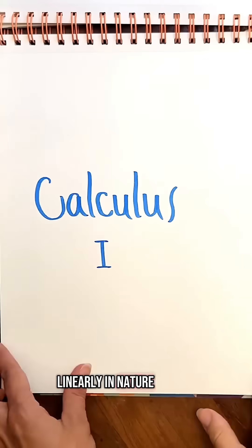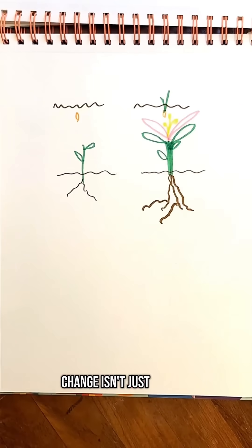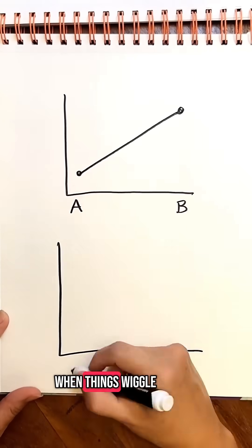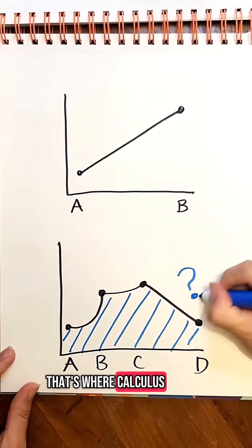Things don't change linearly in nature. Calculus 1 is the math of change, especially when that change isn't just from point A to point B. When things wiggle around to C and slide down to D, that's where calculus comes in.